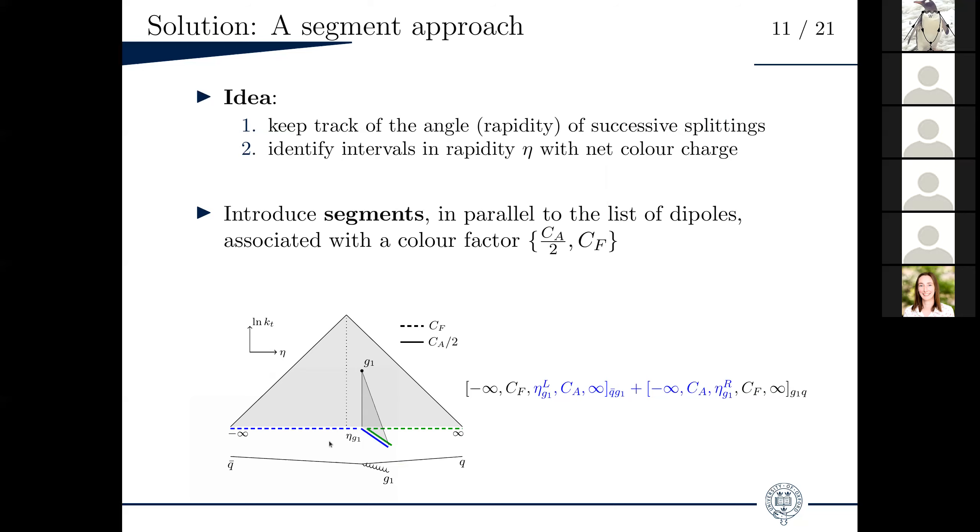But of course, you'd need to update the segments. And this goes like this. The Q-bar Q dipole gets split into a Q-bar G1 and a G1 Q dipole. What you would do very simply is to record the rapidity of this first gluon G1 and insert it into the list. So the first segment for the Q-bar G1 dipole is now a CF factor for rapidities between minus infinity and eta G1, and then a CA between eta G1 and infinity, and equivalently for the other dipole. Keeping this list allows you to basically apply the correct color factor at any time in the shower at leading log. You'd repeat that for any other emission that lands on your Lund plane.